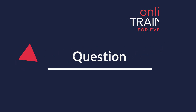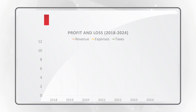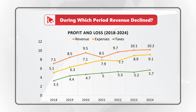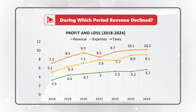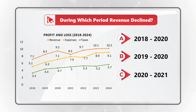Here is a rather unexpected question you might frequently see on the test. You need to determine during which period revenue declined. You're presented with a profit and loss chart covering periods from 2018 to 2024, with three lines representing revenue, expenses, and taxes. The choices are: Choice A, 2018–2020; Choice B, 2019–2020; Choice C, 2020–2021; and Choice D, 2023–2024.